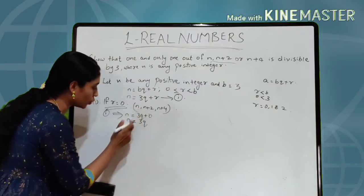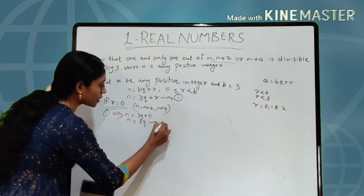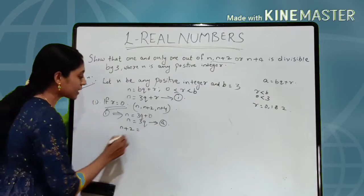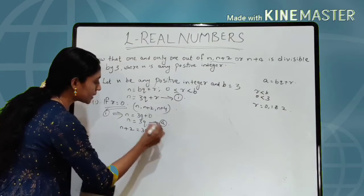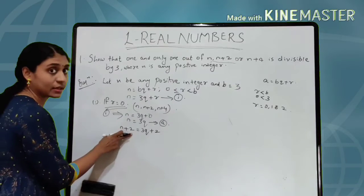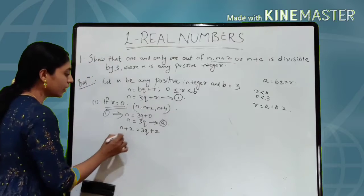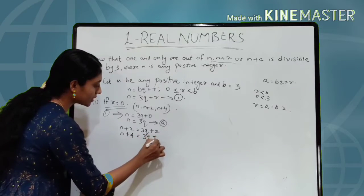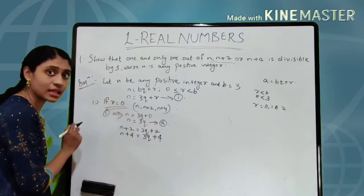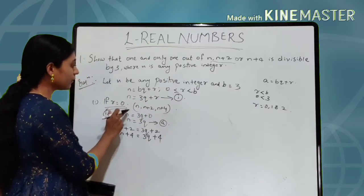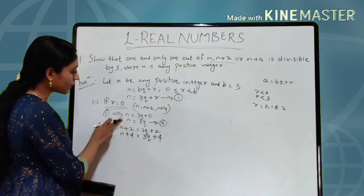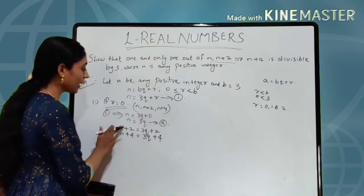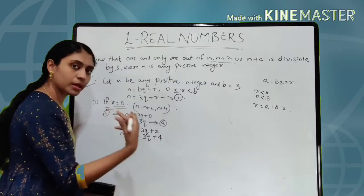Now if N becomes N + 2, then 3Q becomes 3Q + 2, because in the LHS we are adding plus 2, so similarly on the right hand side we also add plus 2. And if N becomes N + 4, the value becomes 3Q + 4, because the remainder is 0. So when R = 0, N = 3Q, N + 2 = 3Q + 2, and N + 4 = 3Q + 4.